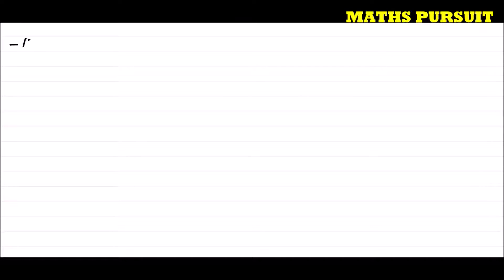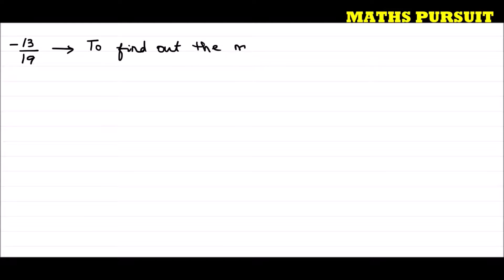The question has given us the number minus 13 upon 19, and is asking us to find out the multiplicative inverse of minus 13 upon 19.